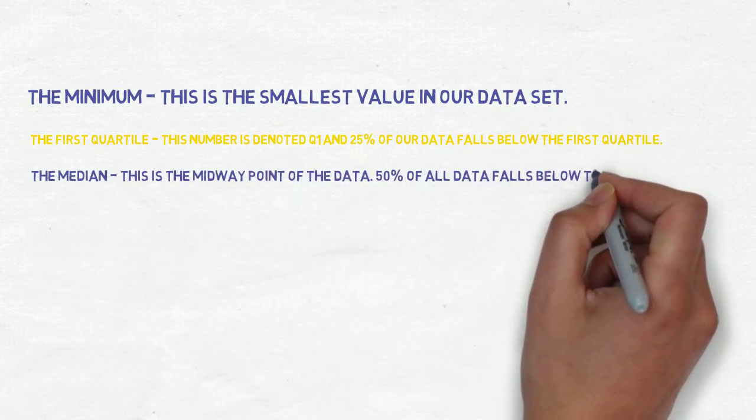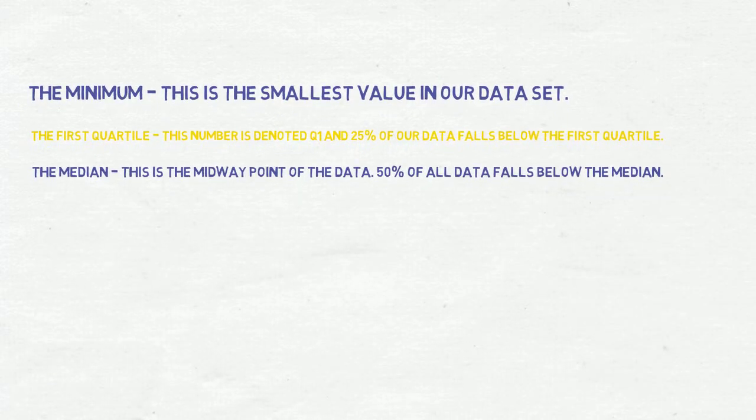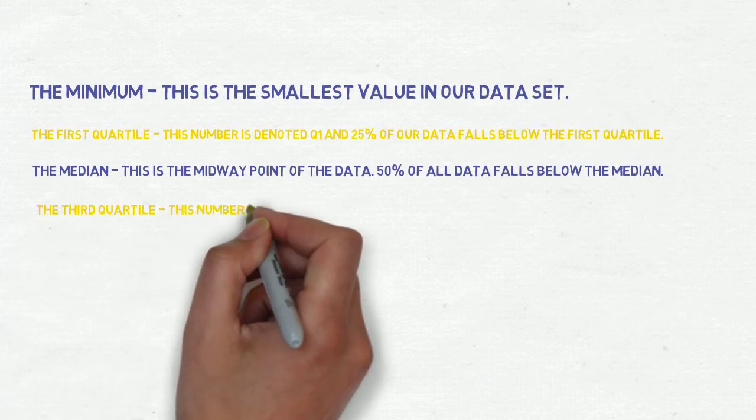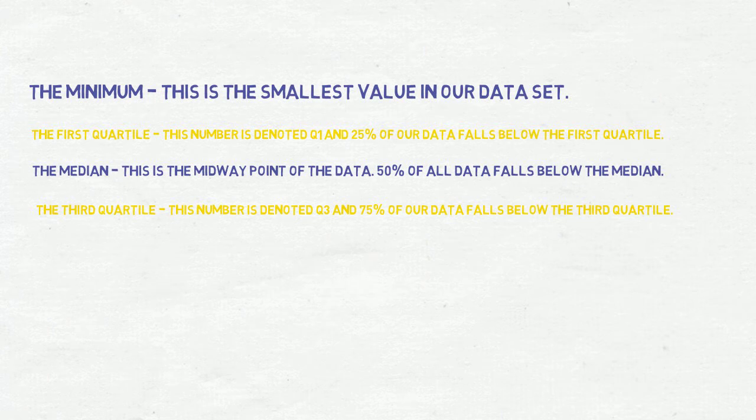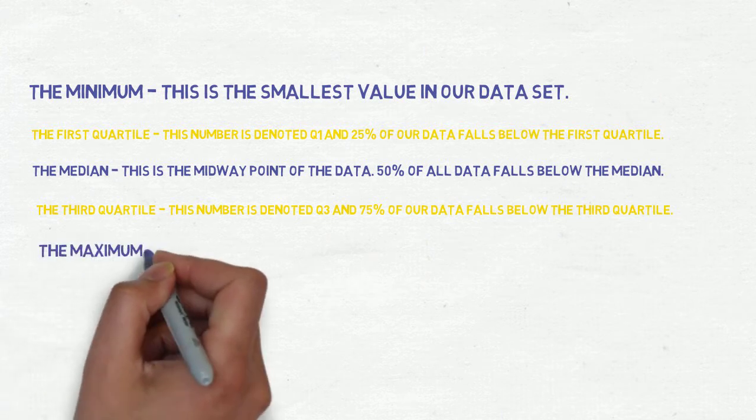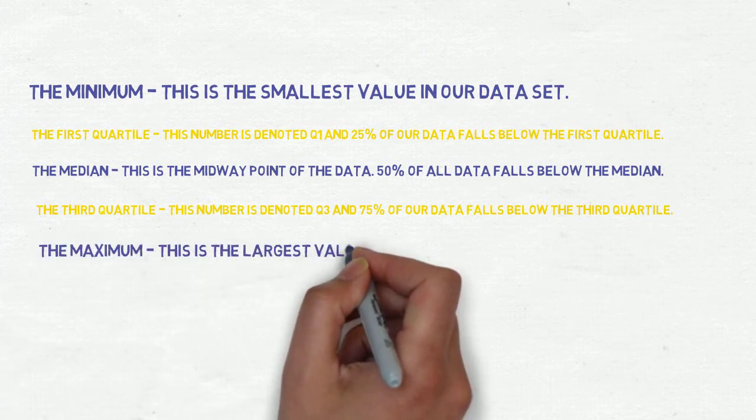3. The median - this is the midway point of the data. 50% of all data falls below the median. 4. The third quartile - this number is denoted Q3, and 75% of our data falls below the third quartile. 5. The maximum - this is the largest value in our data set.